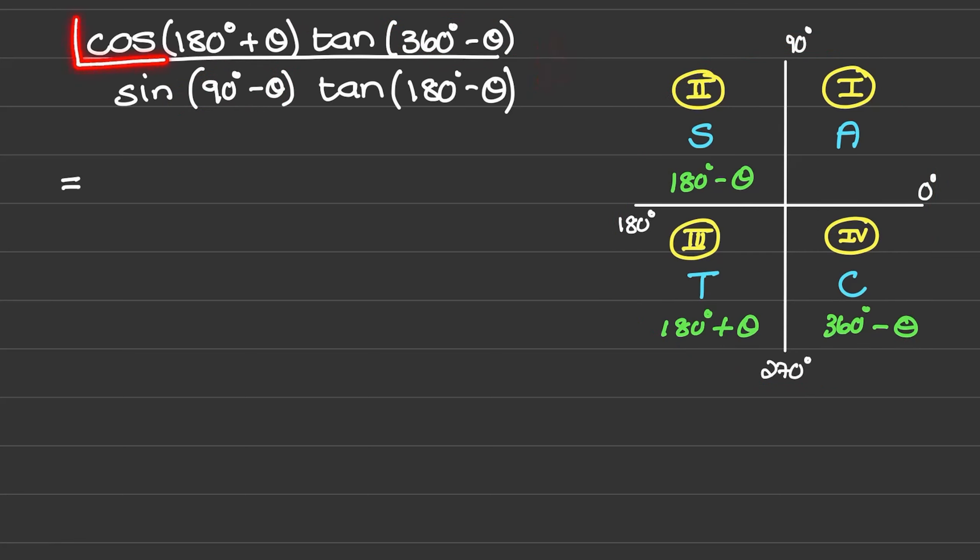First we'll start off with cos of 180 degrees plus theta and we know that places us in the third quadrant and that cosine would produce a negative value in the third quadrant. So our first trig ratio would reduce to negative cos of theta.